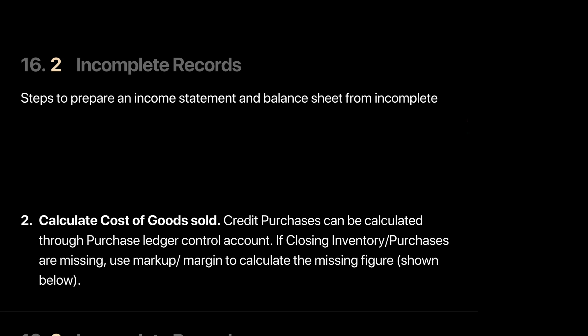Step two is to find our cost of goods sold. The missing figure here will be credit purchases, since small traders or small partnerships don't have sufficient resources to record the total amount of credit purchases made. For that, we draw the purchase ledger control account — just as we drew the sales ledger control account for credit sales. If the inventory figure is missing, that will be covered separately; for now we assume inventory is given but credit purchases are missing.